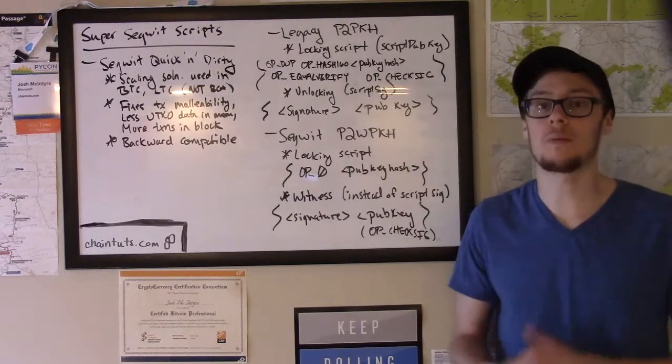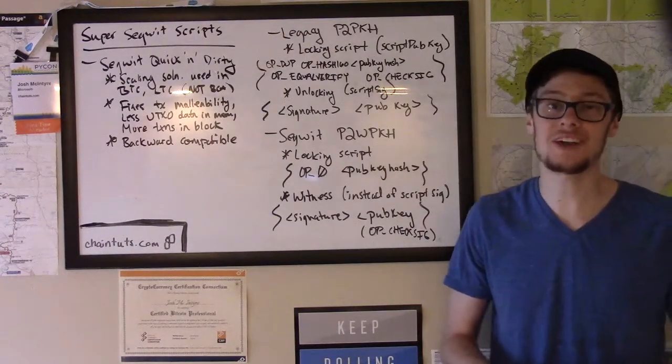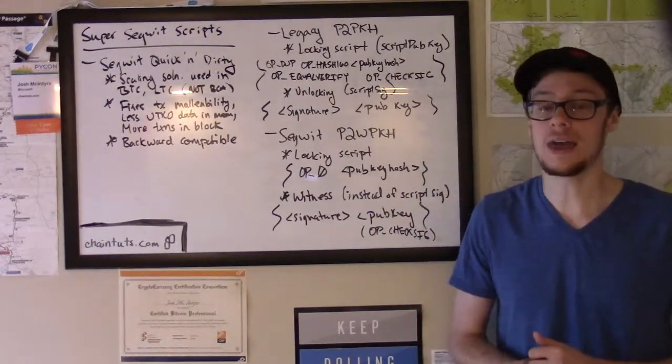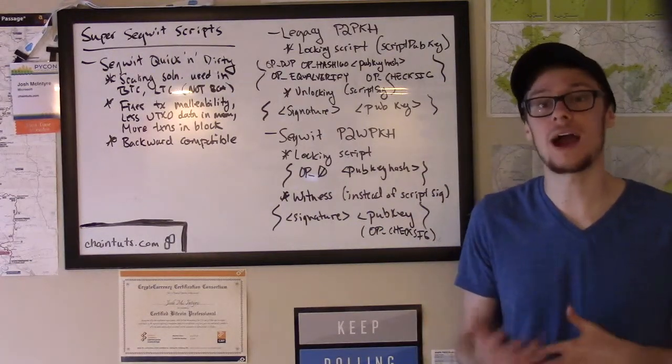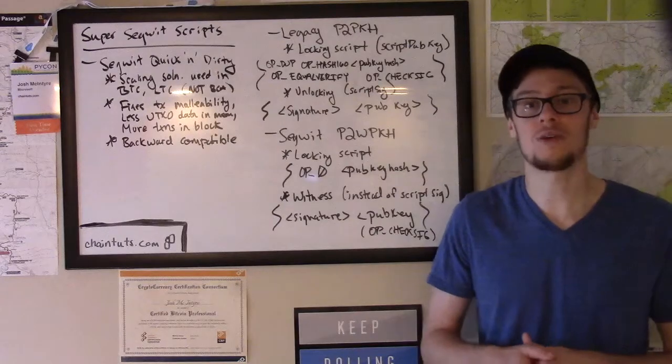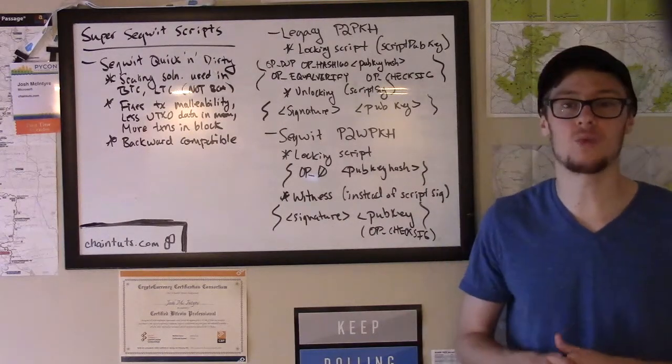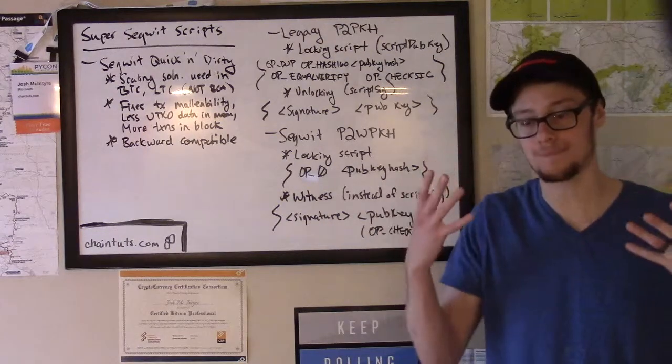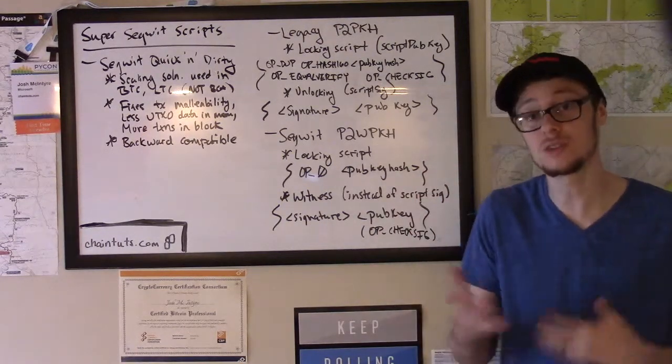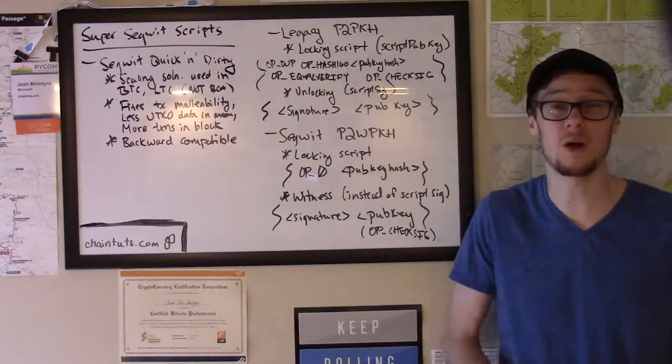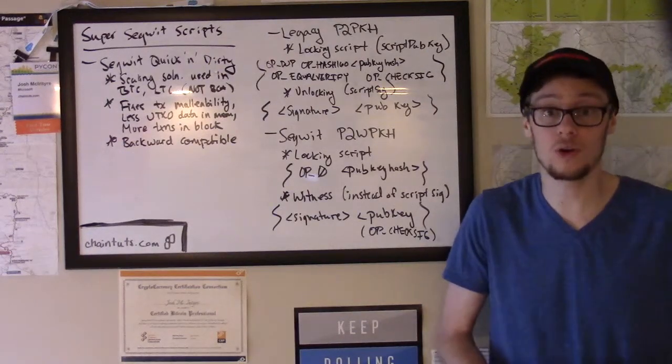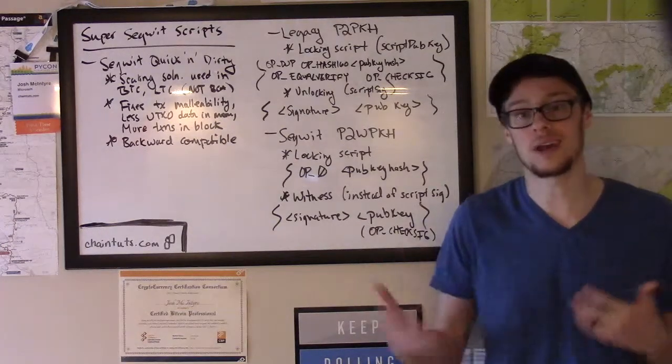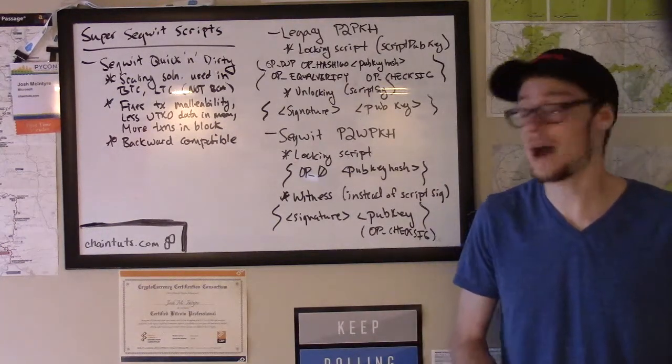When SegWit compatible nodes see this, they will actually technically allow up to about four megabytes worth of data in a block. But generally in a practical sense, you see blocks with about up to two megabytes worth of data counted towards this one megabyte weight limit. It's a little bit complex, but that's generally how it works. And it seems to be working pretty well for Bitcoin and Litecoin unless the network gets too clogged up like we've seen in the past.